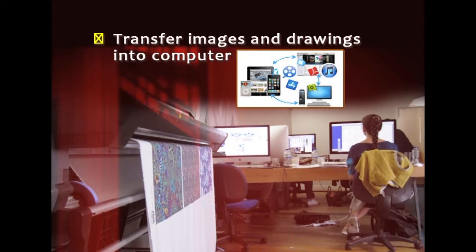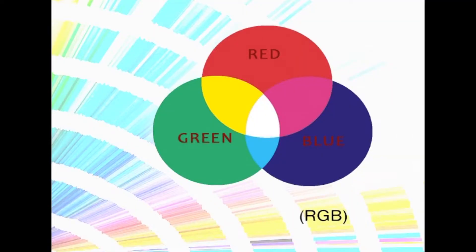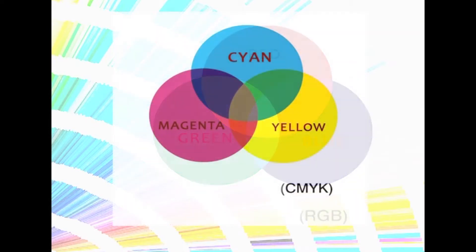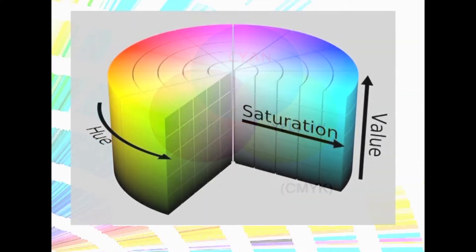Transfer of images and drawings into the computer becomes very easy and use of an image for any number of times is possible — like we can look for croquis and weave diagrams which we can get back and work on. Colour manipulation like RGB — that is red, green and blue — and CMYK for printing, which is cyan, yellow, magenta and black, and HSV — that is hue, saturation, value — all these things can be easily done.